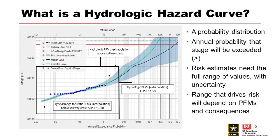There's also a black box on the plot that indicates the typical range for static PFMs — for this particular dam, those occur below the spillway crest. We can interpolate in that portion of the curve because it's based on observed data, so we have pretty high confidence. Notice how tight the uncertainty is there. When we get beyond the observed data, we start looking at hydrologic PFMs like overtopping. There are no blue dots on the right side because we haven't observed floods that large yet, so we use engineering judgment, math, regional data, and at-site data to inform the extrapolation.